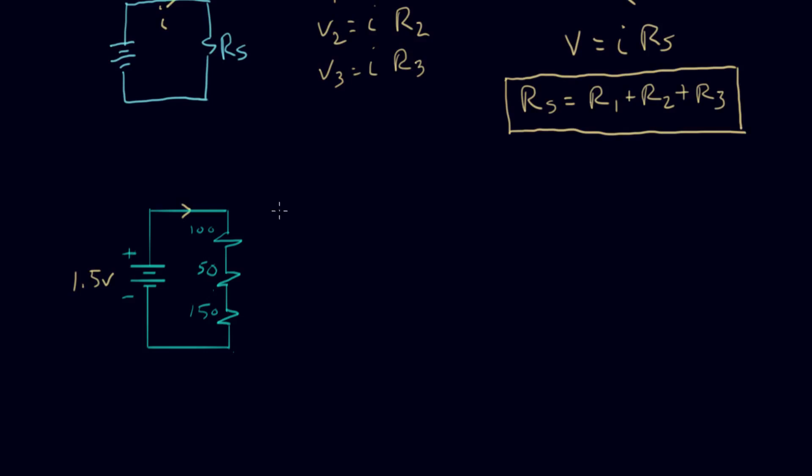So what is the equivalent resistance here? One way to figure this out and to simplify the circuit is to replace all three of those resistors with a series resistor RS. And that is, as we said here, it's the sum, so it's 100 plus 50 plus 150, and that adds up to 300 Ohms.